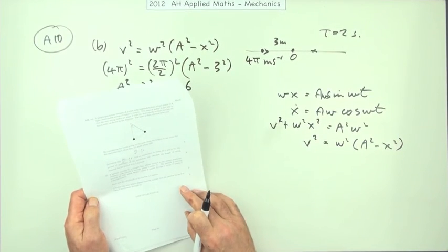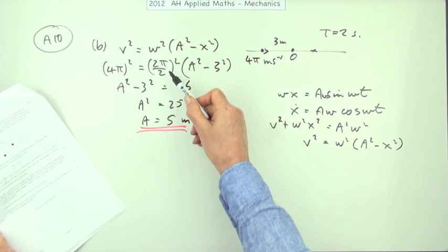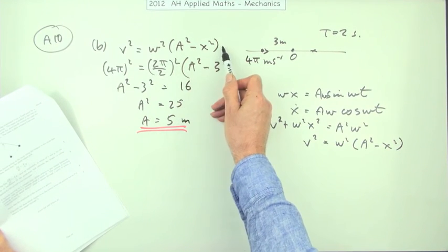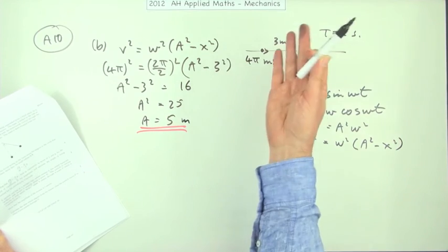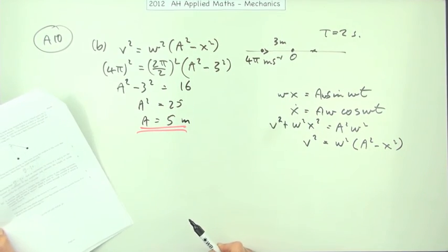Now what's the second bit? That was two marks. One mark seemed to be for getting omega as pi, rather than remembering this. And the second mark was for the answer.